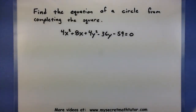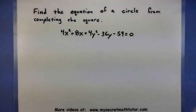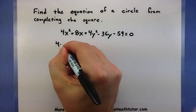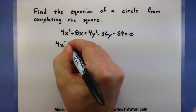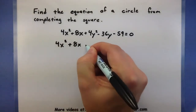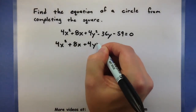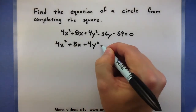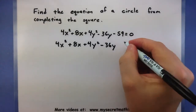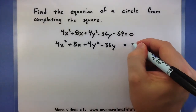Let's start off this process. In completing the square, you want to basically get your variables on one side, and if it doesn't have a variable, go ahead and move it to the other. This will give us 4x squared plus 8x plus 4y squared minus 36y, and then the 59 I will move to the right.